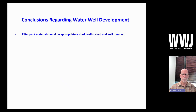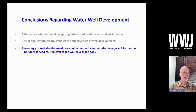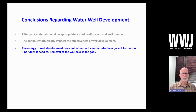Some conclusions from looking at the physics of well development: first, as noted in part one of this series, filter pack material needs to be appropriate for the location, properly sized, well sorted, and well rounded. The annulus really impacts our ability to develop the well. We saw in part one that velocity has a squared relationship with the energy applied to develop the well — so if we change the velocity, the energy impact is the square of that change. The energy of well development doesn't go very far out into the formation, as shown in the diagram, nor does it need to. Just the wall cake is what we need to focus on, with some exceptions, but they're not common.